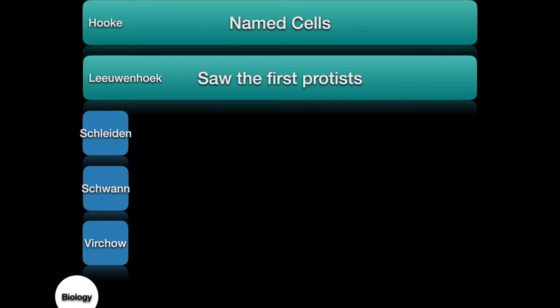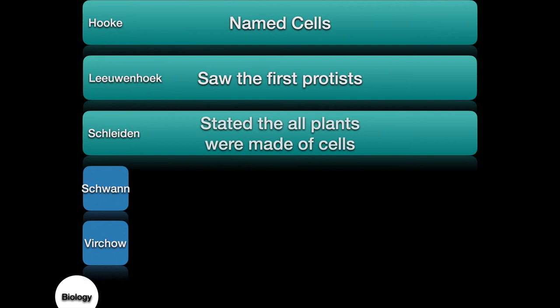Okay, Schleiden, he was the first to state that all plants were made of cells. Now, we have to look at it this way. Did he actually look at every single cell from every single plant? And the answer is no. But what he would have done was looked at enough specimens so he could make this inference based on what he had seen.